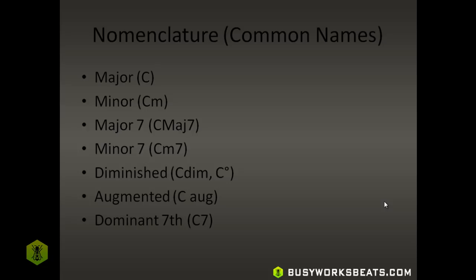When you read C with a little m next to it, it's referring to a minor chord. So you're going to see Am for A minor, Dm for D minor, C minor, and so on — all the notes in minor. It's just a little m next to the note. That's the difference when reading a major chord from a minor chord. Major chords use no notation; they're just assumed to be major. Minor chords are identified by putting a little m next to them.